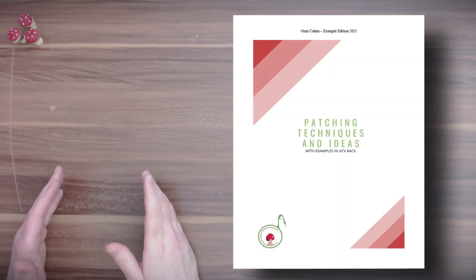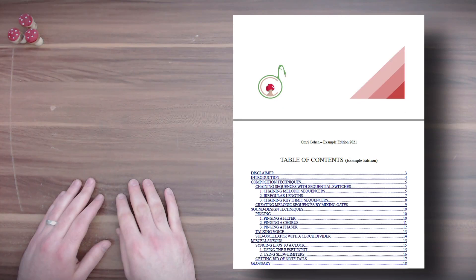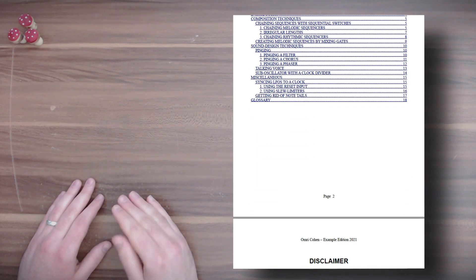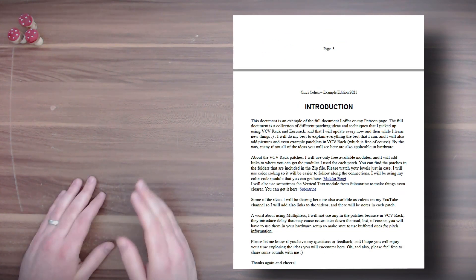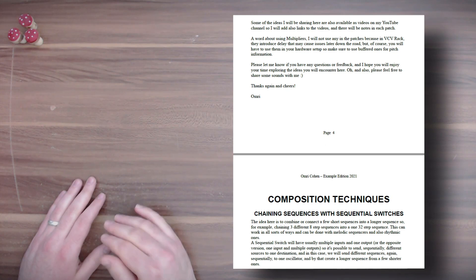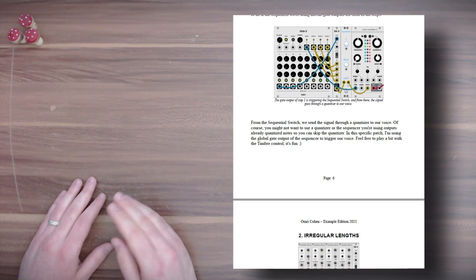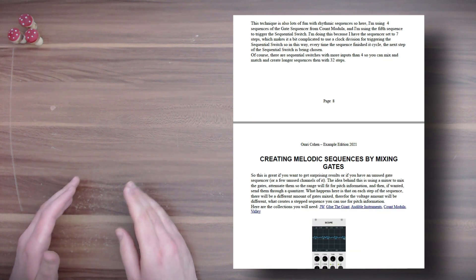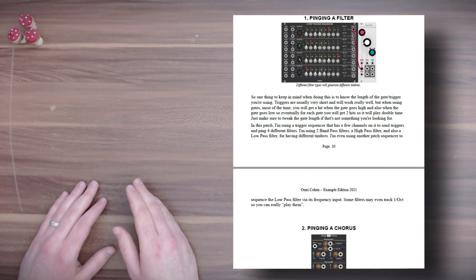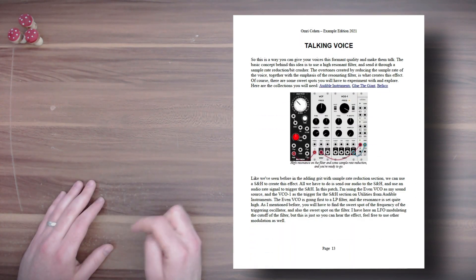About half a year ago, I started working on a document with all sorts of patching ideas, sound design techniques, tips and tricks with examples in VCV Rack. There's an explanation in the document and the VCV patch file to go with it, with an explanation also in the patch itself. I continue to update this document — I released it in June last year and updated it a few times. It's available on my Patreon page, and there's also an example version you can download for free. Links in the description of course.